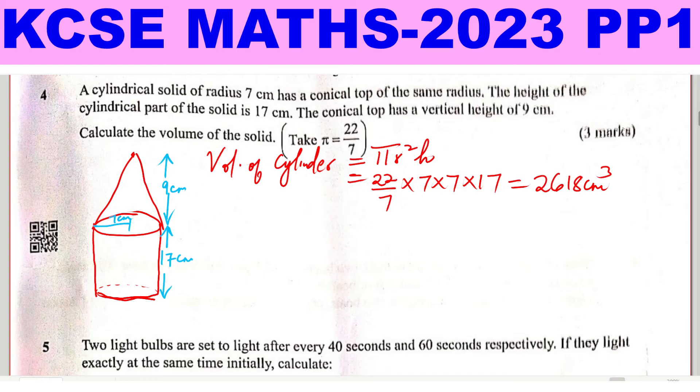Then we go to the cone. Volume of the cone is given by a third in this formula. So we have pi r squared height. We have a third times pi, which is 22 over 7, times the radius 7 times 7 squared, times the height which is 9.